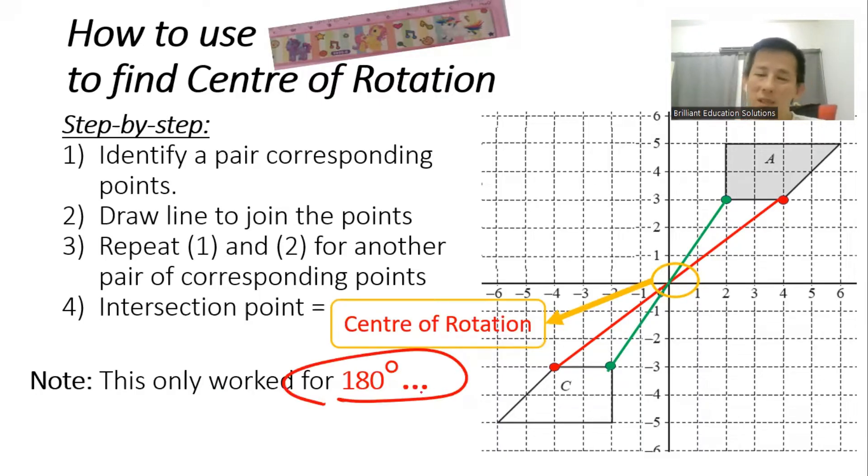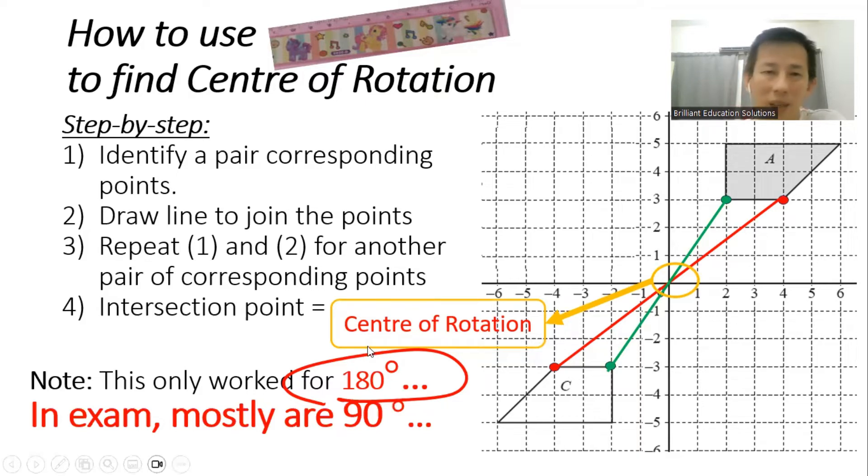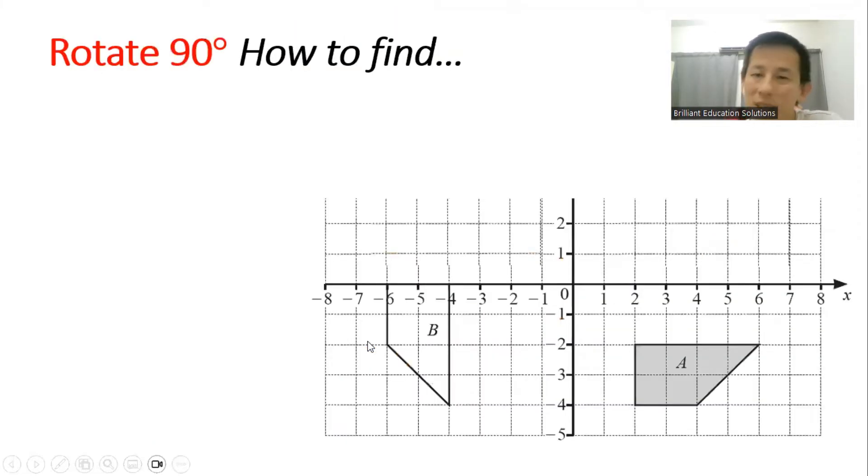For 90 degrees, it doesn't work. And if you do it, take note of the partial equation; most of the equations are 90 degrees. Don't worry, I have you covered here. So for 90 degrees, here's how you find it.